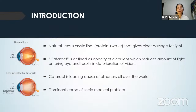Cataract is defined as opacity of the clear lens which reduces the amount of light entering the eye, leading to deterioration of vision. Cataract is the leading cause of blindness all over the world and is also a dominant cause of social and medical problems.